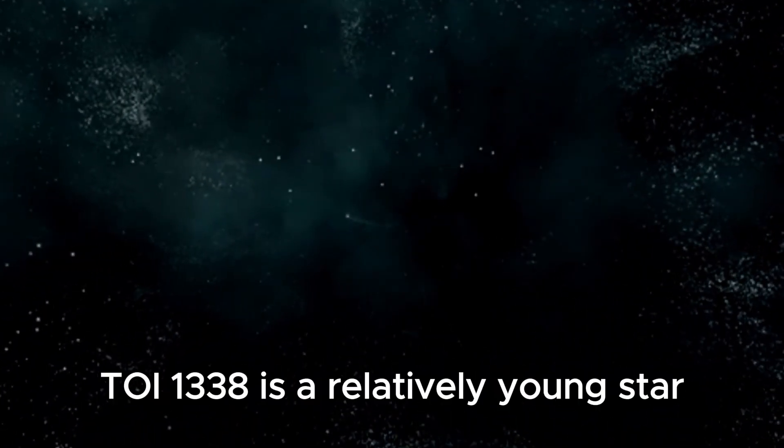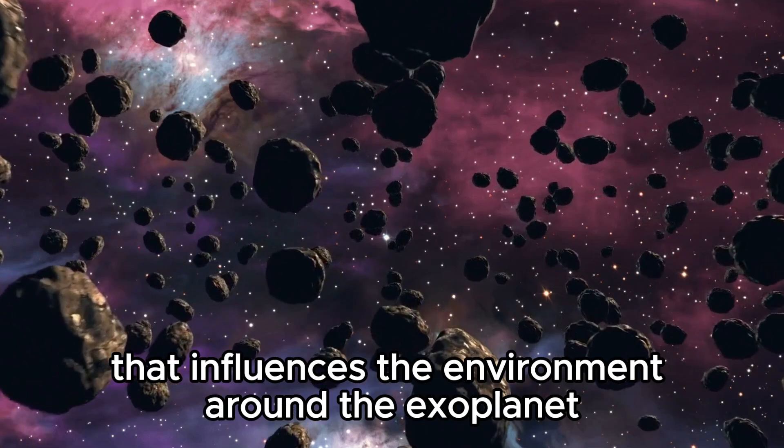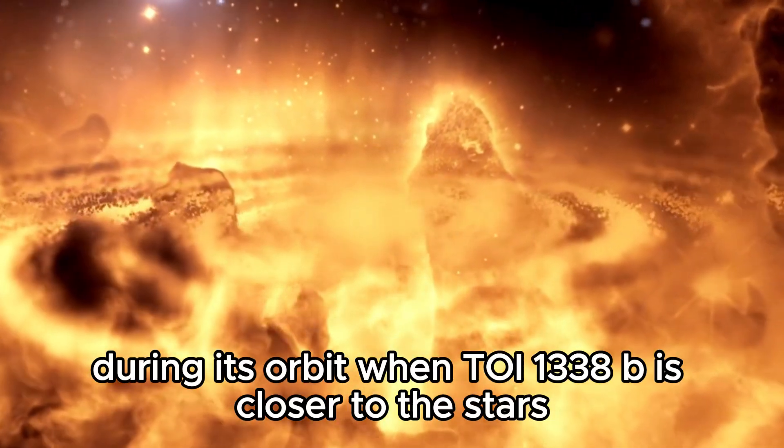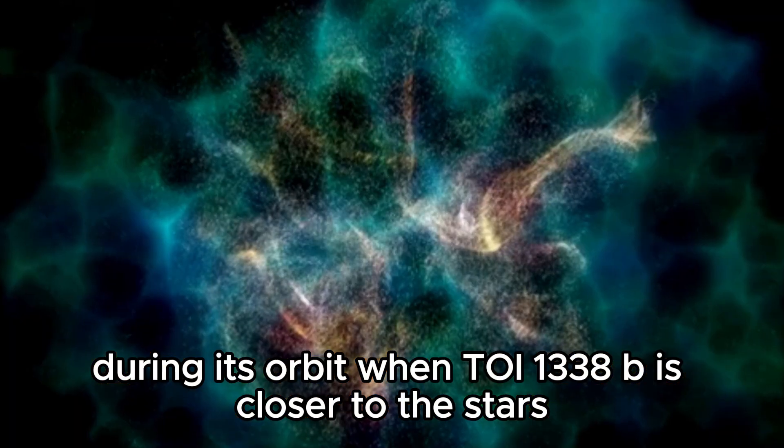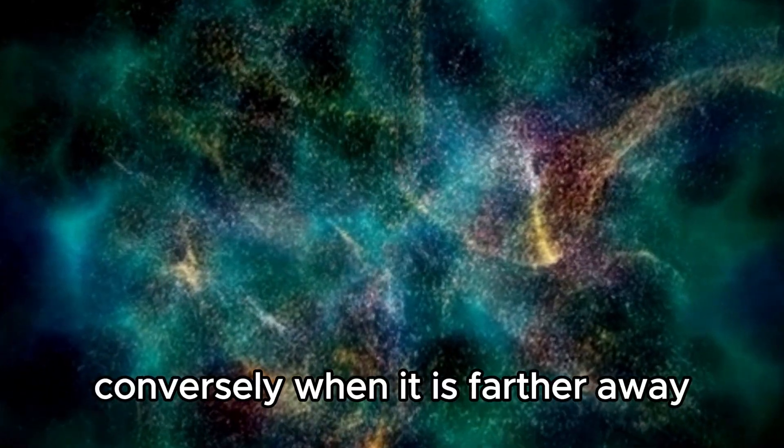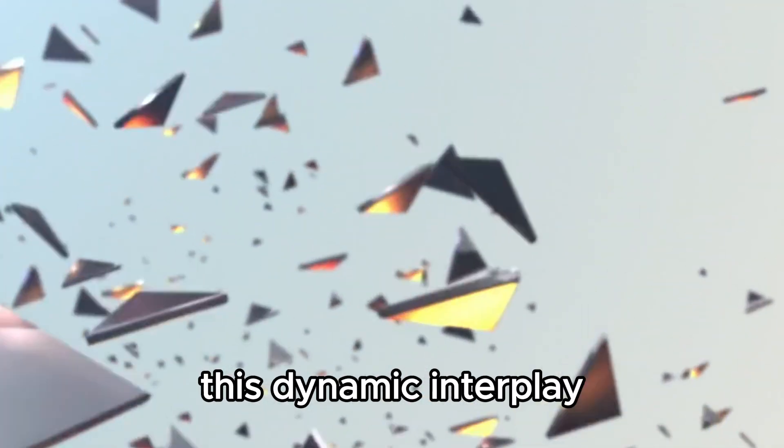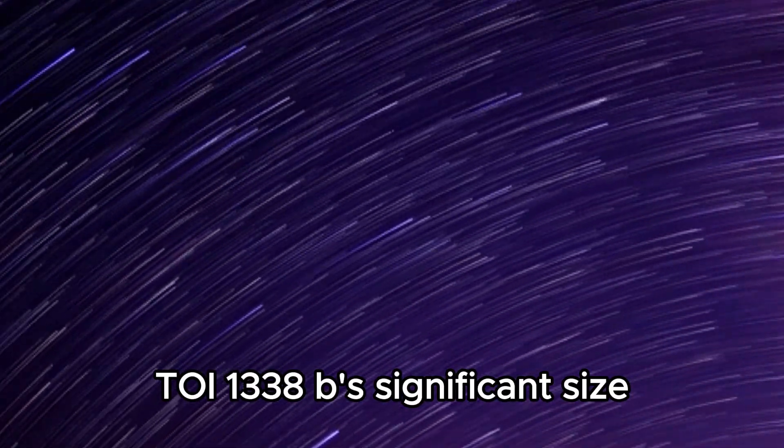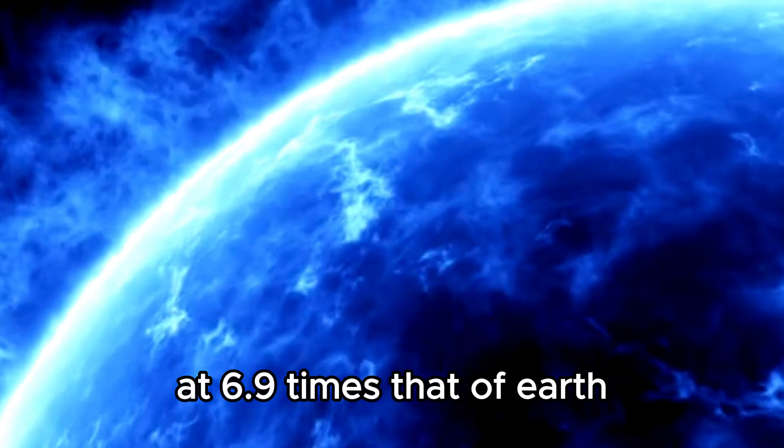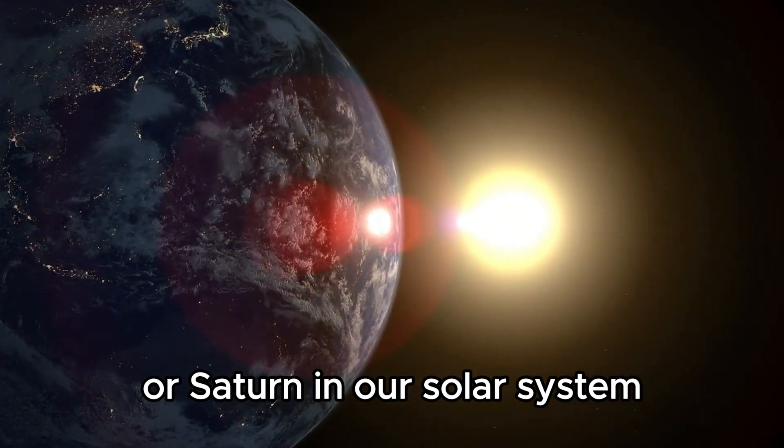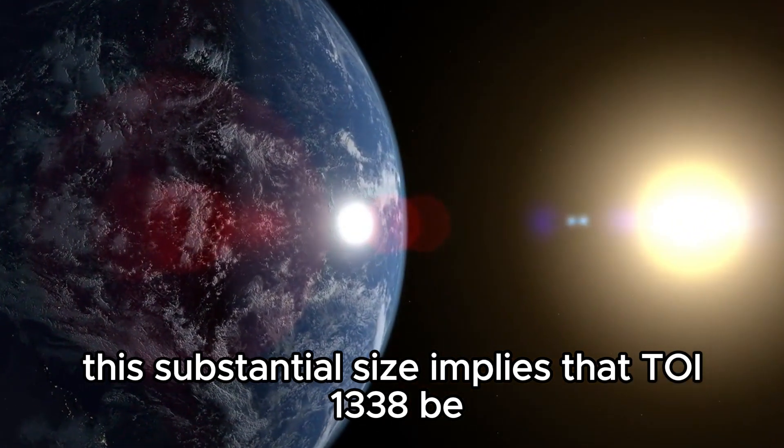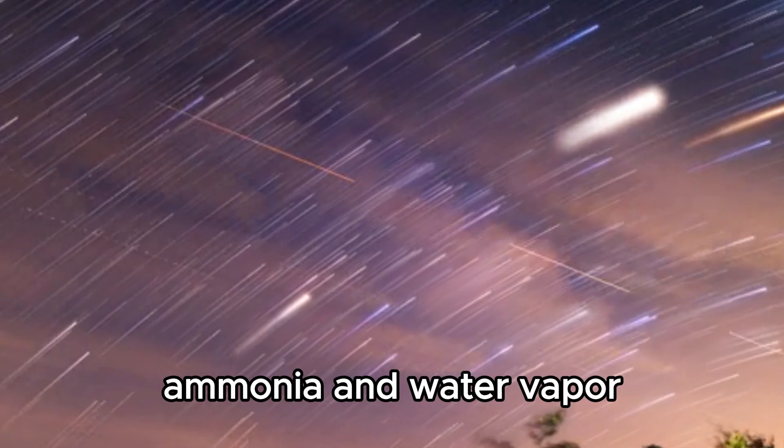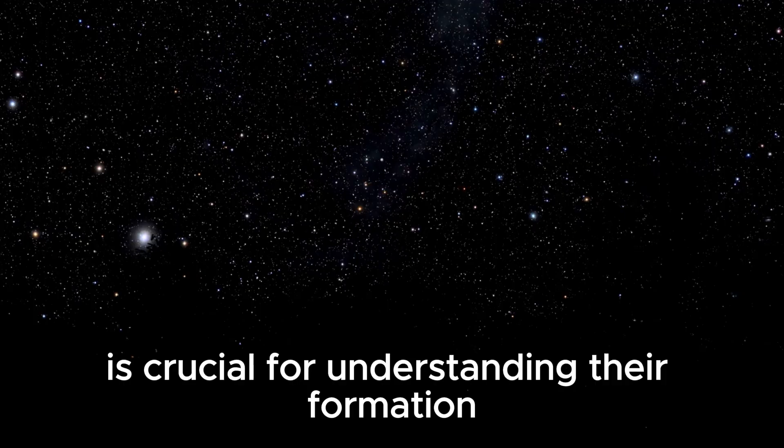The primary star in this system, TOI1338, is a relatively young star that influences the environment around the exoplanet. The variations in transit depth are caused by the changing distance between the exoplanet and its host stars during its orbit. When TOI1338b is closer to the stars, the transit appears deeper because the planet blocks more of the star's light. Conversely, when it is farther away, the transit is shallower. This dynamic interplay provides a unique opportunity for astronomers to study the effects of stellar radiation on exoplanets in binary systems. TOI1338b's significant size, at 6.9 times that of Earth, suggests it is a gas giant similar in composition to Neptune or Saturn in our solar system. This substantial size implies that TOI1338b likely has a thick atmosphere composed predominantly of hydrogen and helium, with possible traces of methane, ammonia, and water vapor.